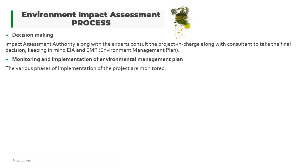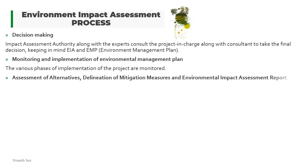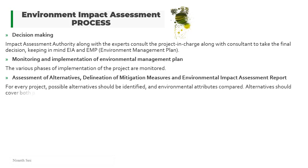The next stage is assessment of alternatives, delineation of mitigation measures, and the environmental impact assessment report. Here, the priority of the project is identified and environmental attributes are compared. Alternatives should cover both the project location and process technologies.